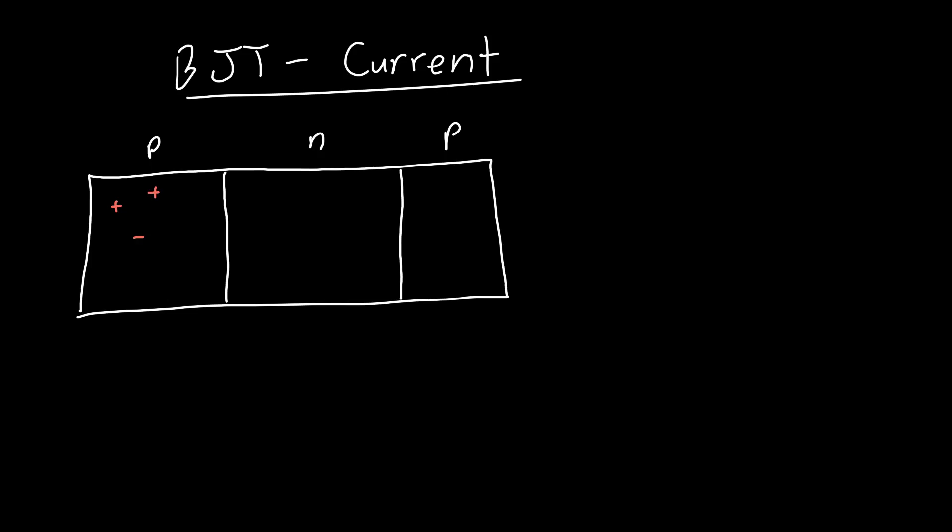We've got a bunch of holes on this P side and electrons in this N side. When we apply a voltage to this PN junction on the left, this is acting like a diode. We're getting current out of that diode, and we want to collect all of that current on the right-hand side. So we reverse bias this diode.